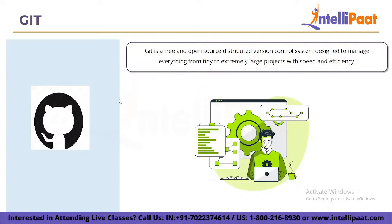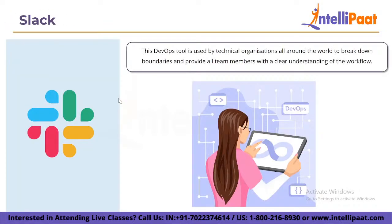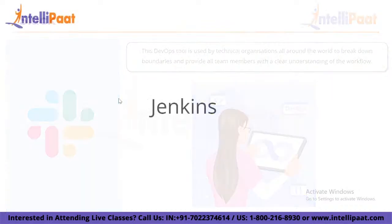Next is Slack, which was launched in 2013 and is still one of the top communication tools used by teams for effective project collaboration. This DevOps tool is used by technical organizations worldwide to break down boundaries and provide all team members with a clear understanding of the workflow. Slack has an innovative feature that allows developers to work using tool chains in the same environment where they communicate with other staff. It is essentially a messaging platform for businesses or teams, allowing you to manage day-to-day communications by creating channels via its workspaces feature. Slack's robust APIs enable integrations with a wide range of apps.